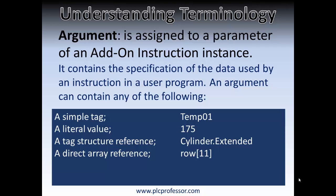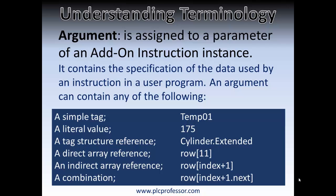It could be a direct array reference, meaning it is referring to element 11 of the tag row — a single dimension array called rows. So if you have a row of cartons, the first carton would be 0, the second 1, and so on up to element 11. It could also be an indirect array reference — if the index was 10, then it would still be row element 11, so you can index this reference with an index value. Or it could be a combination of an indirect array reference and a tag structure reference.